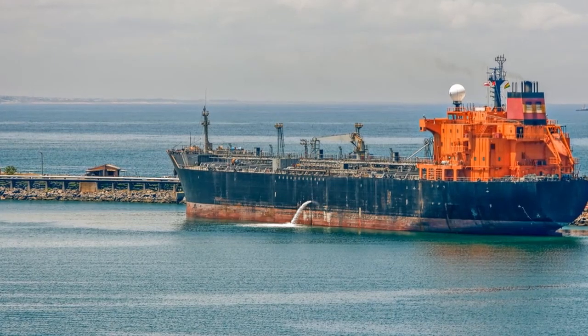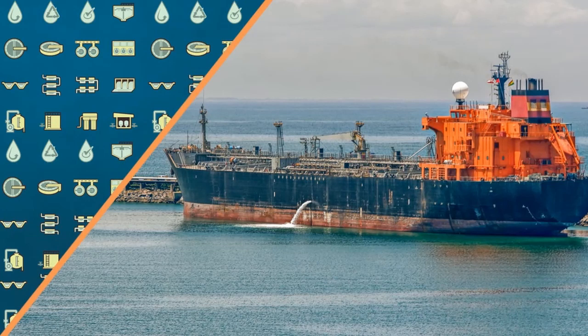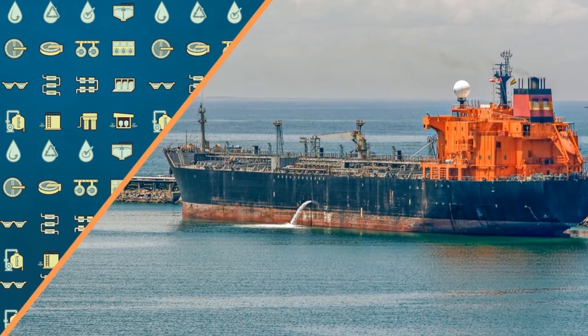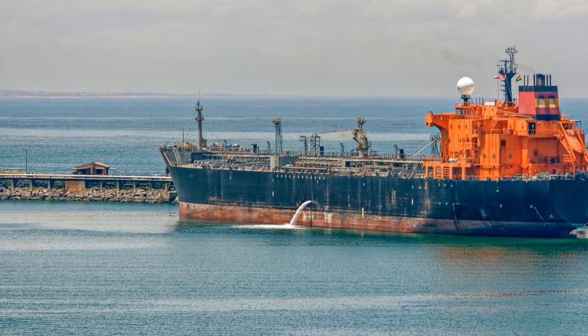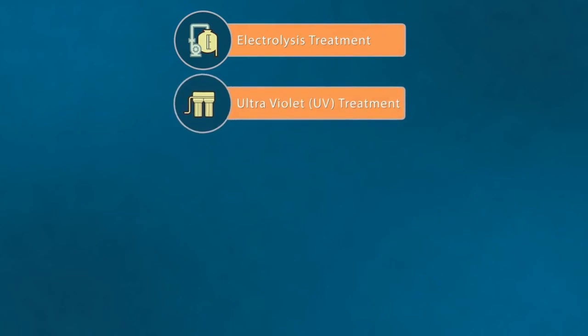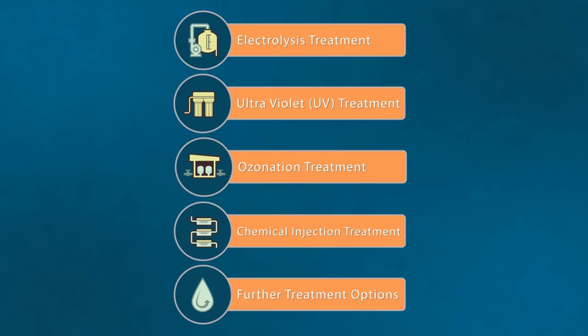There are a wide variety of treatment options for ballast water. We shall briefly consider the main treatment technology options. The main technologies utilized in ballast water treatment systems are electrolysis treatment, ultraviolet treatment, ozonation treatment, and chemical injection. Most of these technologies are supplemented by filtration, either classical static filtration or dynamic filtration. Each technology has advantages and disadvantages.